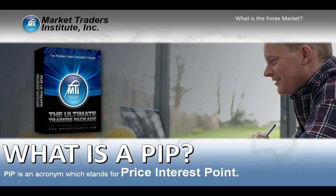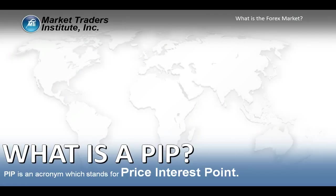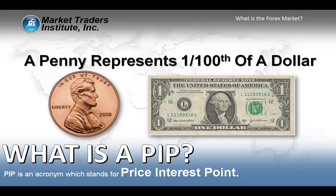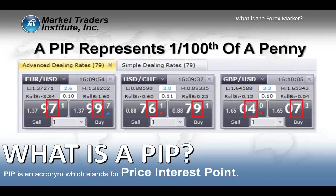This is where we start talking about how we make money. What we're trying to do in this market is capture PIPs. PIP is an acronym — it stands for Price Interest Point. A PIP has the exact same relationship as a penny does to the dollar. There are 100 pennies in a dollar, meaning a penny represents 1/100th of a dollar. If you can imagine a unit of measure smaller than one penny, that would be equivalent to a PIP. A PIP represents 1/100th of a penny, just like a penny represents 1/100th of a dollar.